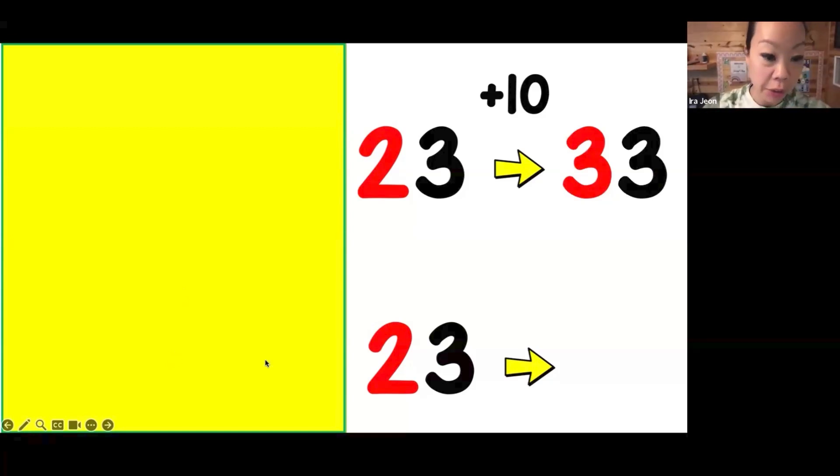Sanaya counted on by 10, which is okay too, but our goal is to do this in our head. That's called mental math. So 10 less than 23, what would that number be? It's 13. Did everybody get 13? Perfect.